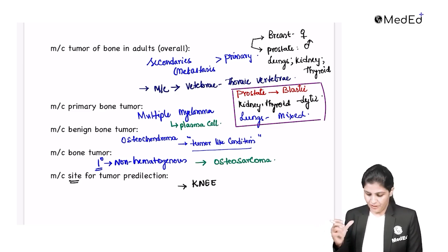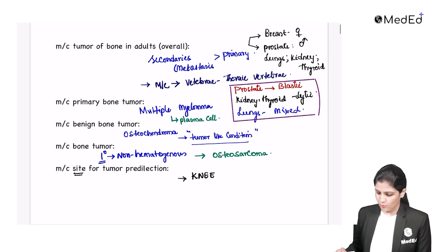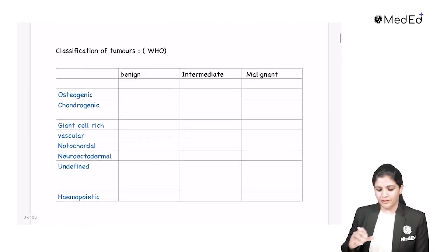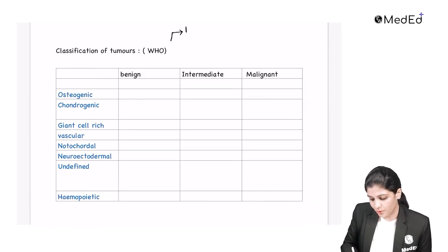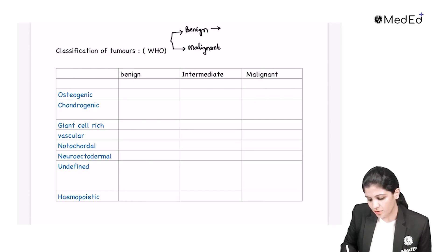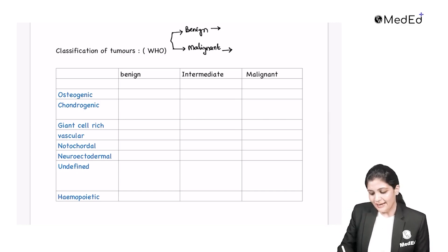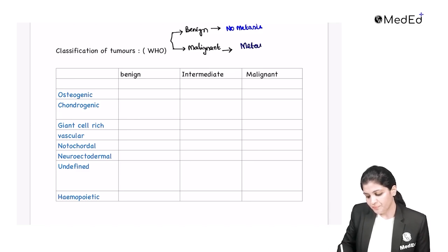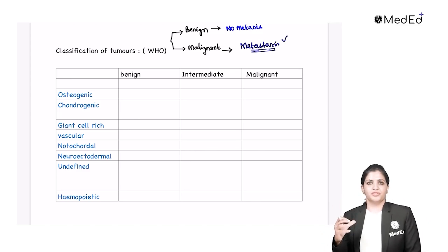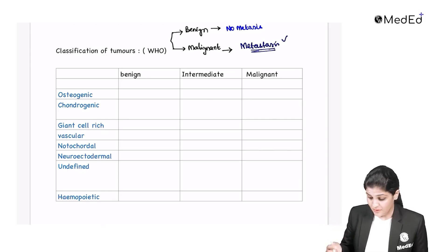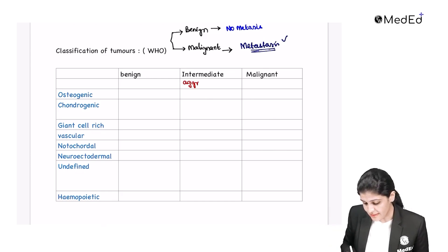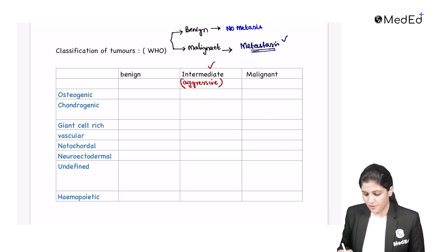These are the important high-yielding one-liners. Now let us look at the important tumors. Bone tumors can be of benign variety — localized to one site with no metastasis — or malignant, characterized by metastasis. In bone tumors there is also an intermediate variety called benign aggressive, which sits between benign and malignant and is characterized by recurrence.